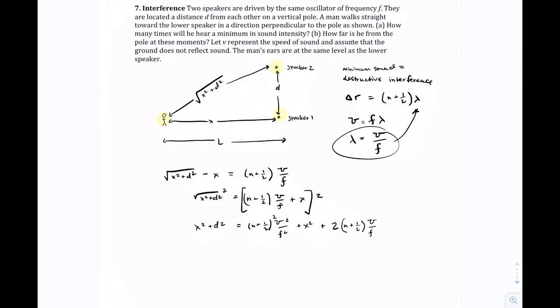And then that's going to be N plus one-half V over frequency X. So now we have this really ugly long thing, but you can notice right away that X squared appears on both sides, so that goes away.